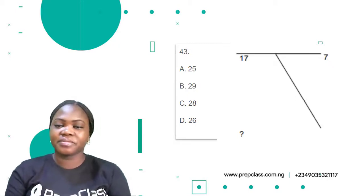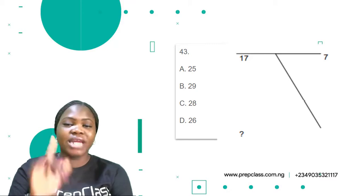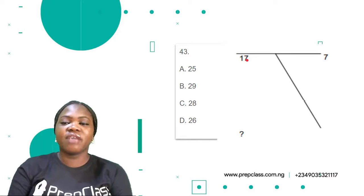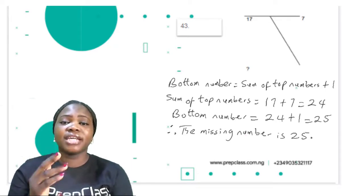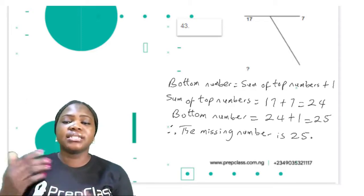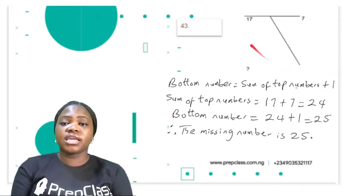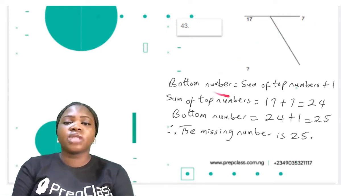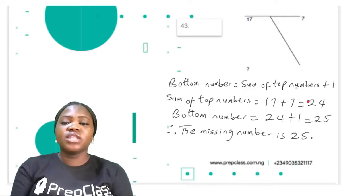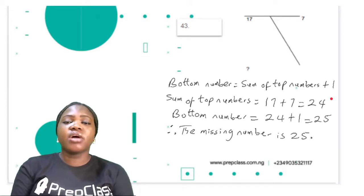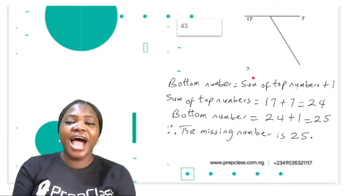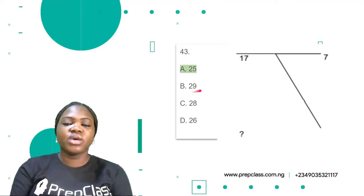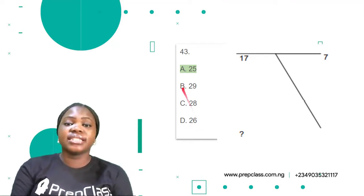Question 43: the two top numbers are 17 and 7; find the bottom number. The bottom number equals the sum of the top numbers plus 1. Sum of 17 and 7 is 24, and 24 plus 1 is 25. So the bottom number is 25. The options are A: 25, B: 29, C: 28, D: 26. The correct option is A — 25.